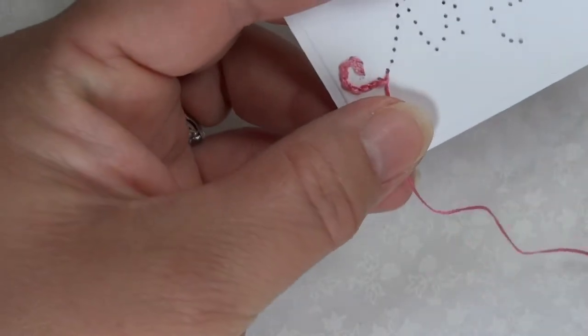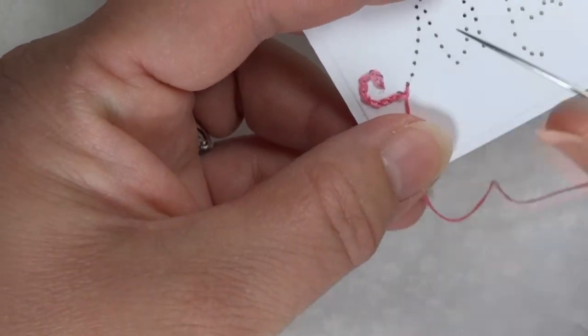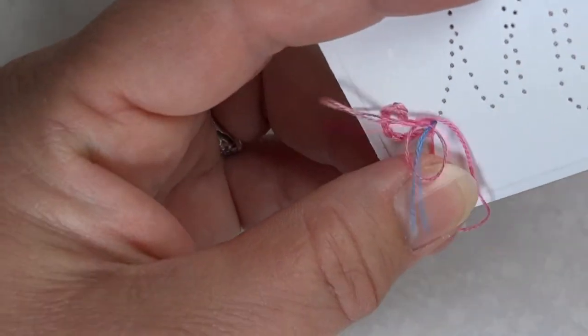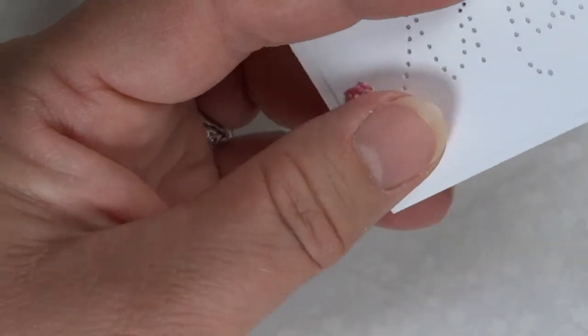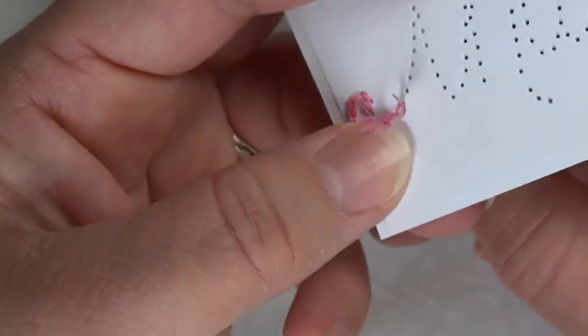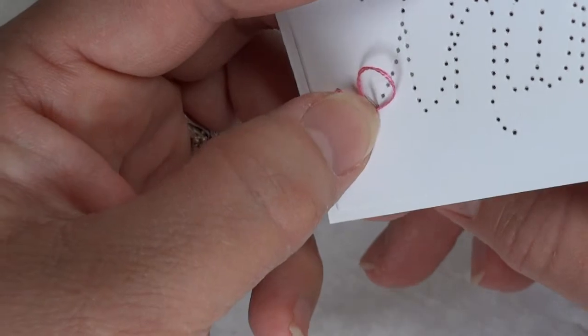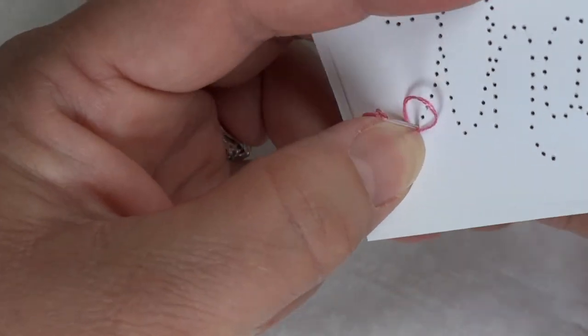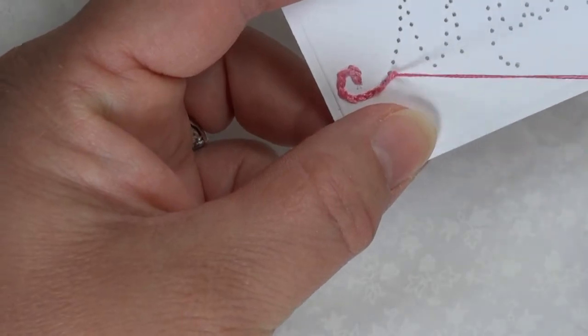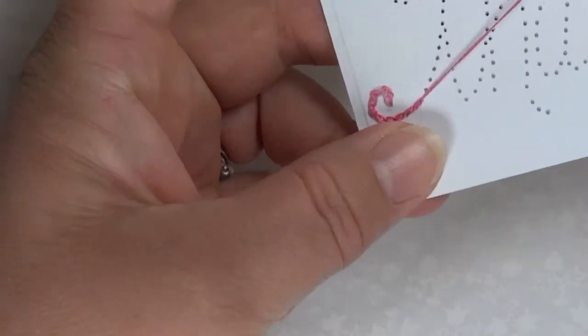Pull your thread down to open up the hole that the last thread came through. Back down through the same hole. Make a loop. Up from the next hole into the center of the loop. And you just continue on like that along your path.